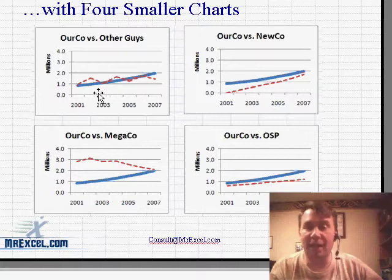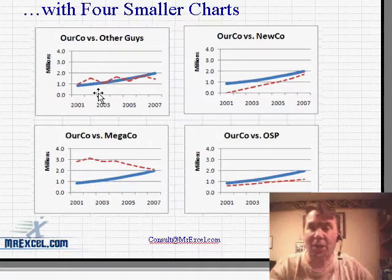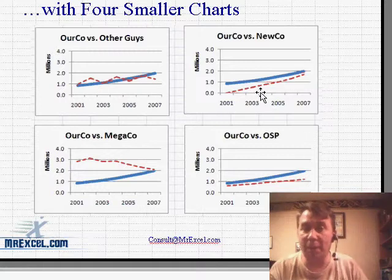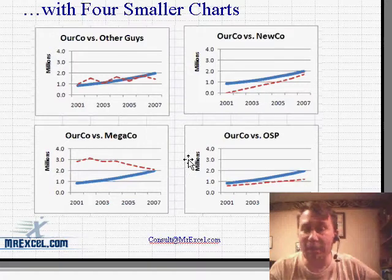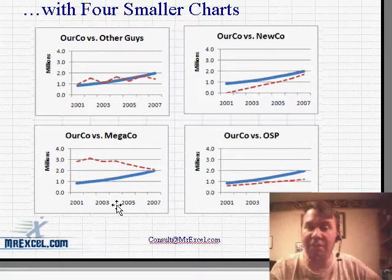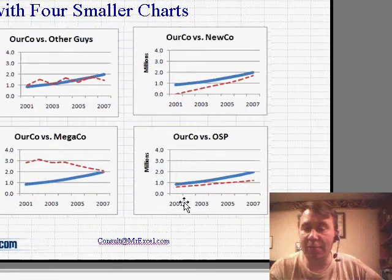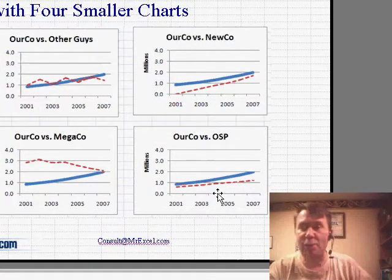Now we can see our company versus the other guys — the other guys are just going up and down and we're smooth. Versus the new company, who's coming along and is about the same size as we are. The mega company that had market share is falling off and we've actually been meeting them. And then versus some other company, we're kind of trending along.